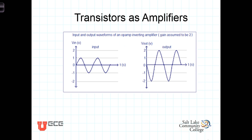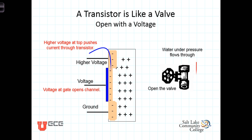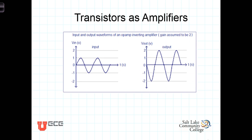Transistors can also be used as amplifiers. Amplification is the process of taking a relatively small waveform — a small voltage or current — and amplifying it to make it larger. Transistors are amplifying devices by their nature. Coming back to the water valve analogy, very small voltages on the controlling terminal — effectively very small movements on the valve handle — can make the valve open and allow large amounts of current through. A relatively small voltage creates a large change in current, and that's basically what amplification is: a small controlling signal causes large variations at the output.